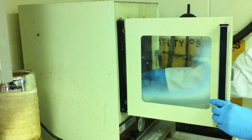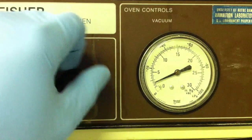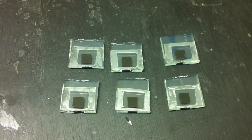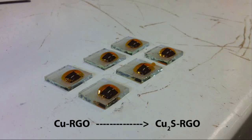The counter electrodes are then placed in a vacuum oven at 110 degrees Celsius overnight. A parafilm spacer is melted on the surface of the electrode, and the copper RGO composite material is allowed to react with the polysulfide electrolyte to form copper sulfide RGO.